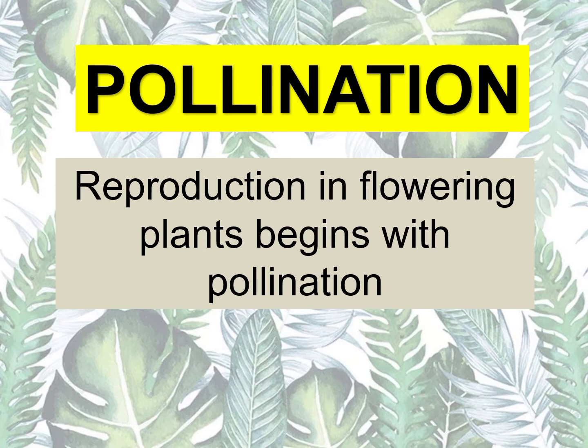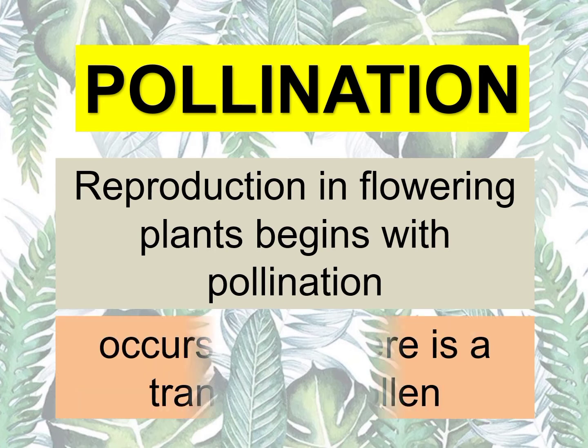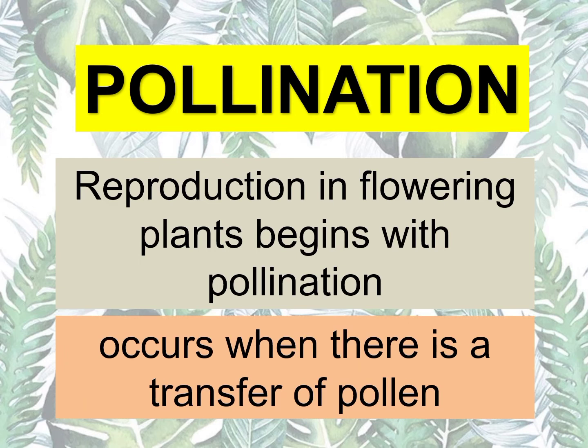Para mag-start ng reproduction, kailangan magkaroon ng pollination — parang sa tao at hayop, para magsimula ang bagong buhay, kailangan magkaroon ng fertilization, ang pag-sasama ng sex cells ng male at female. It occurs when there is a transfer of pollen. Kaya siya tinawag na pollination — yung pollen grains ang tinatarget natin. Galing ang pollen grains sa stamen, dun sa male part. Pag yung pollen grains ay successful na nakapag-transfer sa female part ng flower, which is the pistil, that is where pollination will occur.